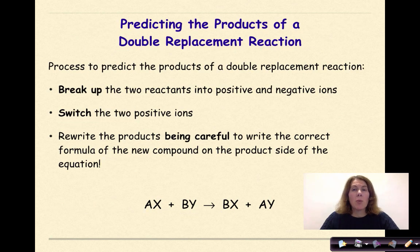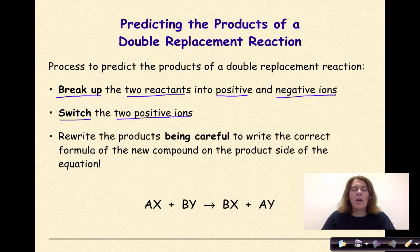Predicting the products of a double replacement reaction. This is the general process of how to predict the products. The first thing that you are going to do is break up the two reactants into positive and negative ions. Then you are going to switch the two positive ions.